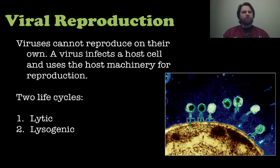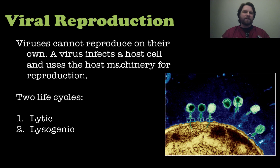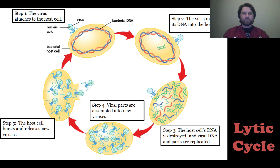So let's talk about the reproduction of a virus, because there are two life cycles that are really, really important: the lytic cycle and the lysogenic cycle. Viruses cannot reproduce on their own, so they have to infect a host cell in order to carry out their life cycle. They basically infect the cell and then use the cell as an assembly line to make more viruses. But these two different life cycles are extremely different.